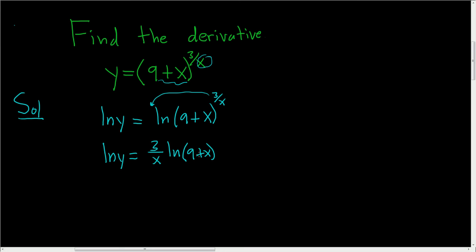Now we'll take the derivative of both sides with respect to x. When we take the derivative of the natural log of y with respect to x, we get 1 over y times the derivative of the inside function. The inside function is y, and its derivative is dy/dx. So that is the chain rule.